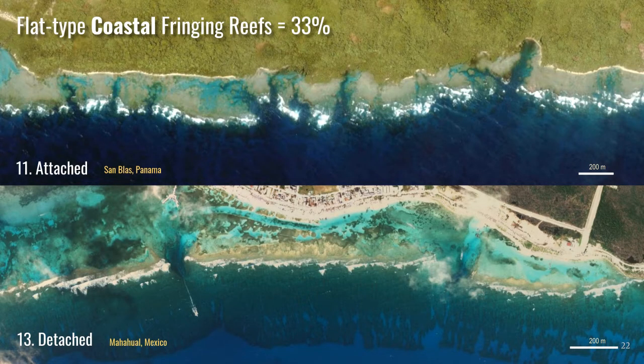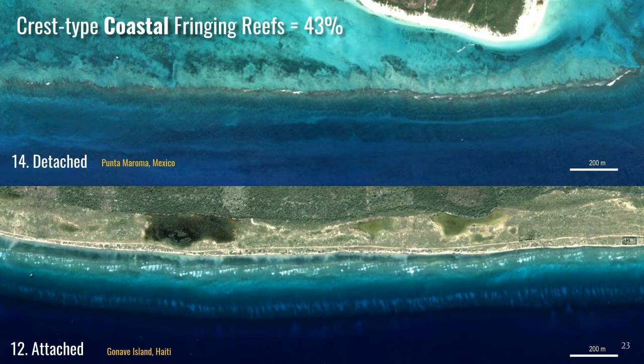Looking at the common reef types, starting in the coastal setting we have flat type coastal fringing reefs, forming 33% of all fringing reefs. There are two categories: the first is attached to the shore with no lagoon, like at San Blas in Panama, and the second is detached from the shore with a narrow lagoon, like at Mahahual in Mexico. These two flat types have a tendency to cause coastal advance because the shallow reef flat reduces virtually all wave energy under fair weather conditions.